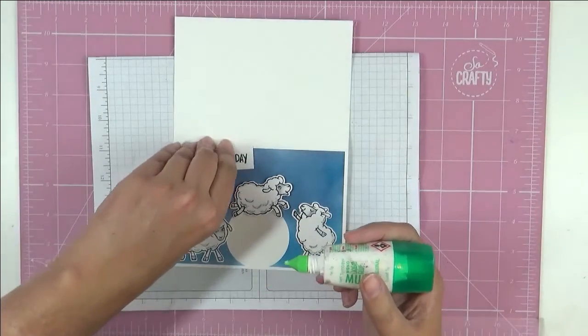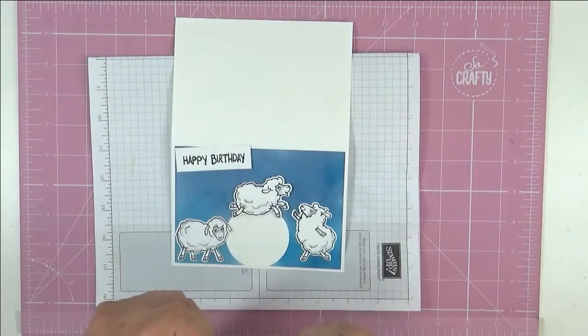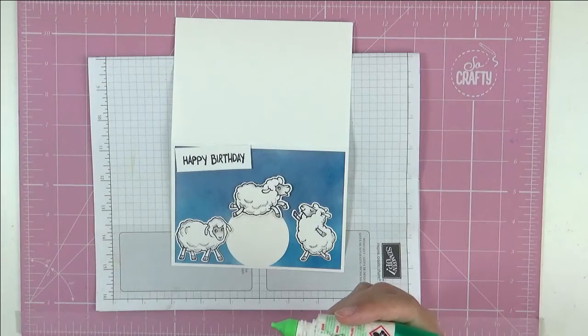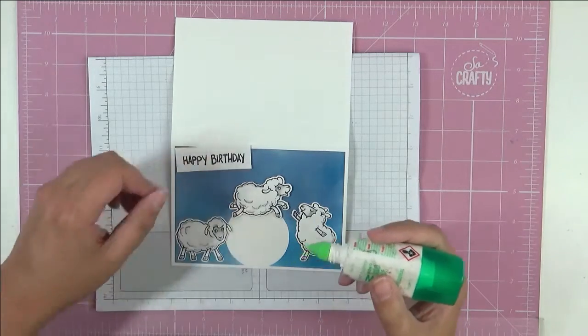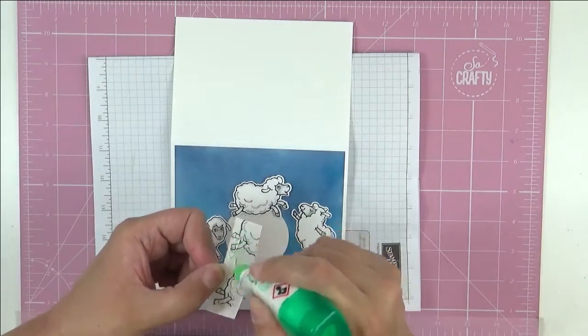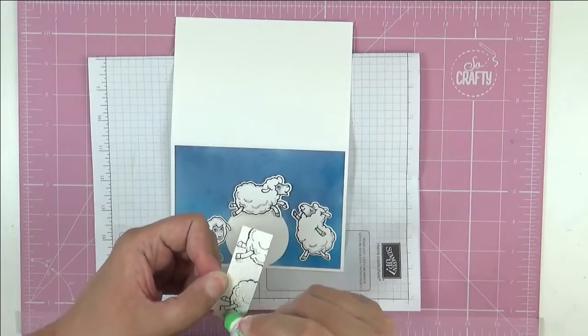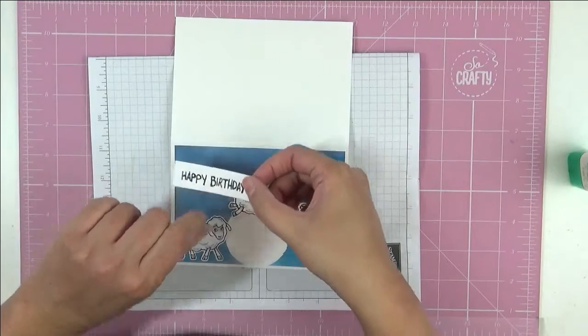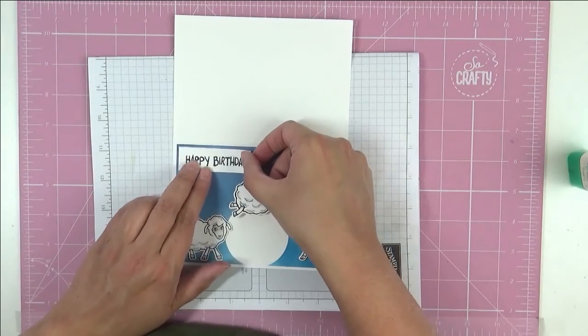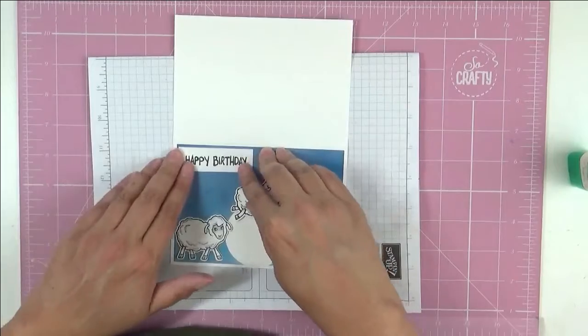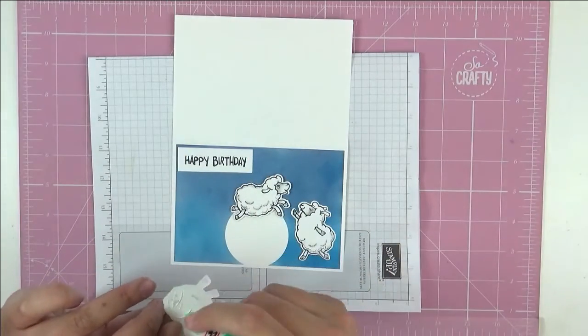So let's start gluing down. I'm just going to use some Tombow this time because I can get into all the little places. Except it's all gunked up and that's all on my fingers. Lovely. Try and get rid of most of it and then we'll start again. You can see I've used just a piece of scrap here for the sentiment. Just like that, and then this little sheepie here.